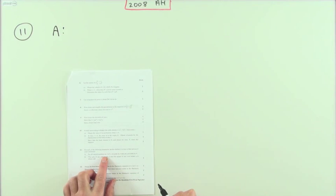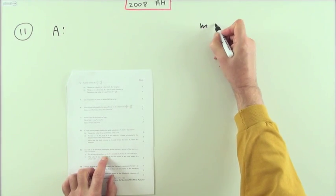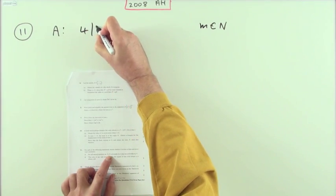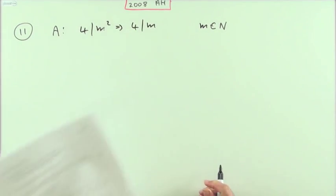For statement A, it says for all natural numbers m, so m comes from the set of natural numbers. If m squared is divisible by 4, so 4 divides m squared, it says then 4 divides m. Prove or disprove.